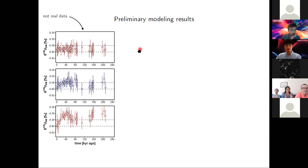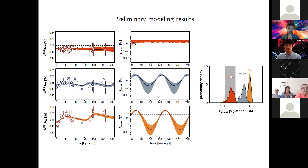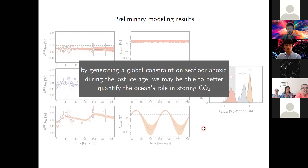I haven't gotten to results yet because I've spent a fair bit of my postdoc time in quarantine. These are not real data, but this is an illustrative example of what we might find. I've done modeling to show the constraints we could get — ranging from a very minimal signal to something large. We'll fit these data with a model that tells us about the evolution of seafloor anoxia. At the last glacial maximum, the peak of the last ice age about 20,000 years ago, different scenarios imply either near-modern levels of seafloor anoxia or higher values. Coupling those constraints to 3D general circulation models could then tell us something about the amount of carbon stored in the deep ocean. Stay tuned on that front.